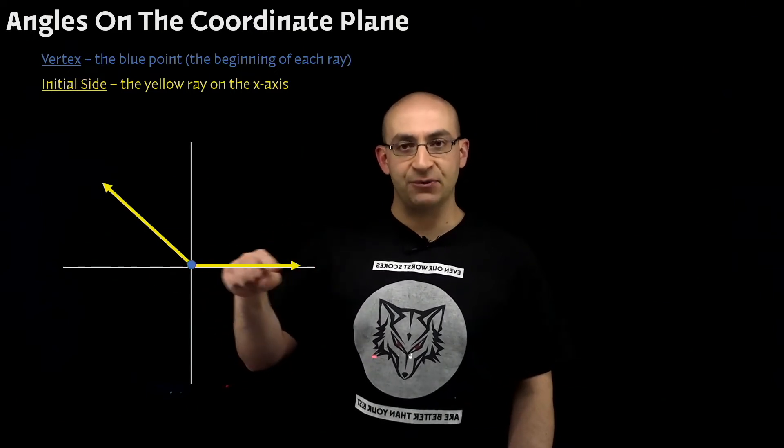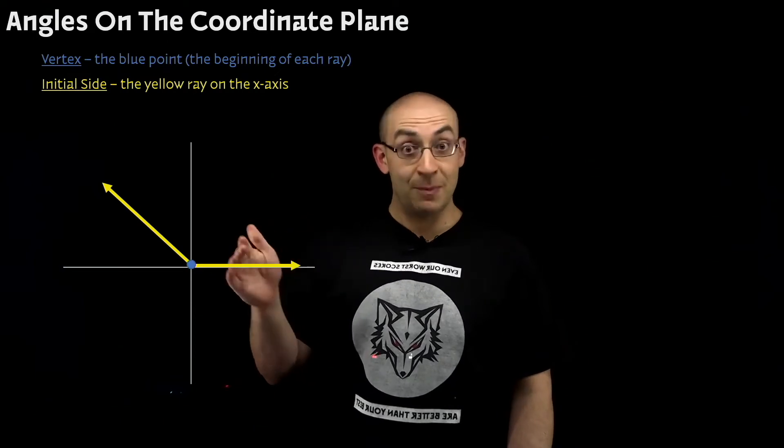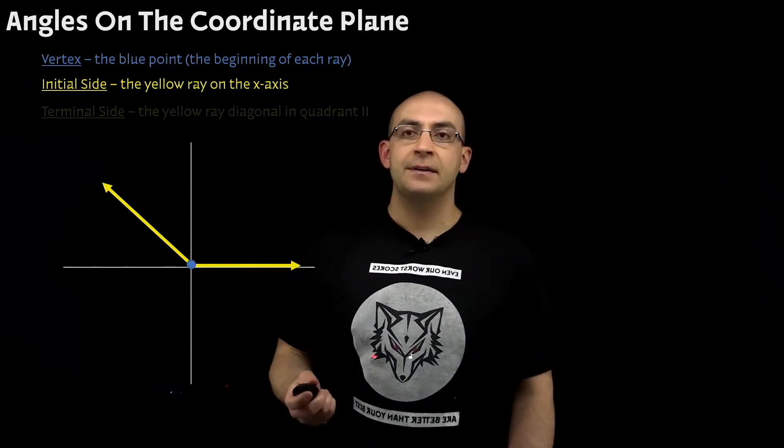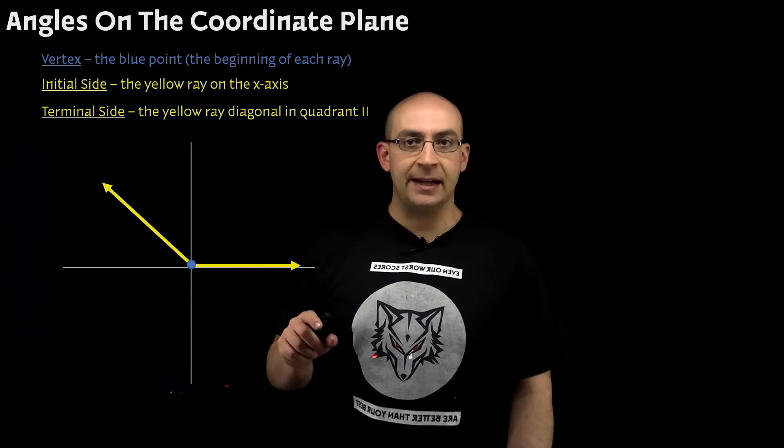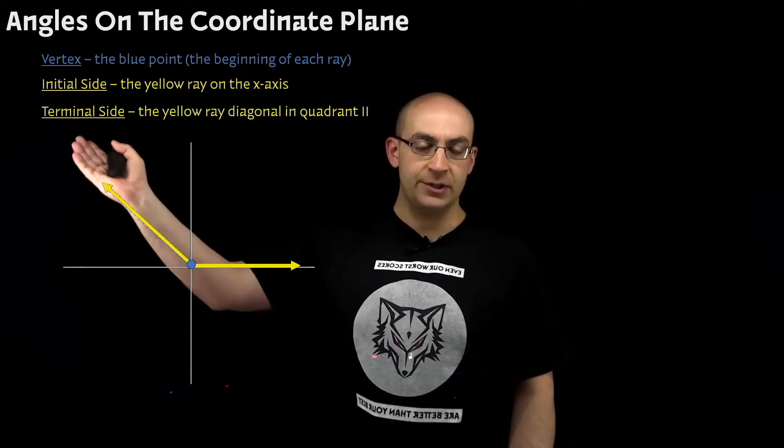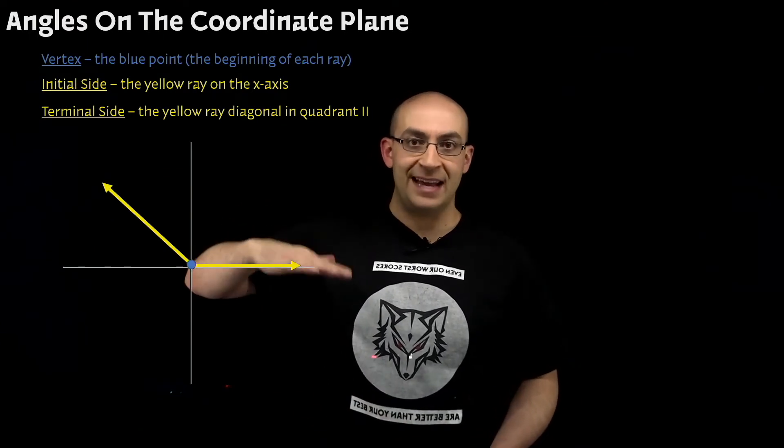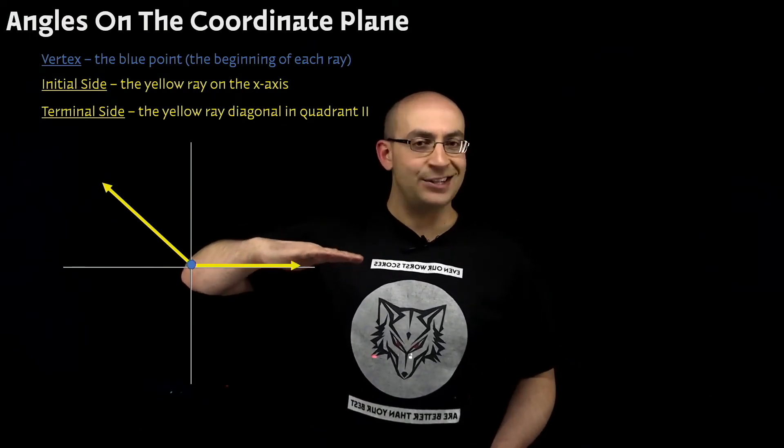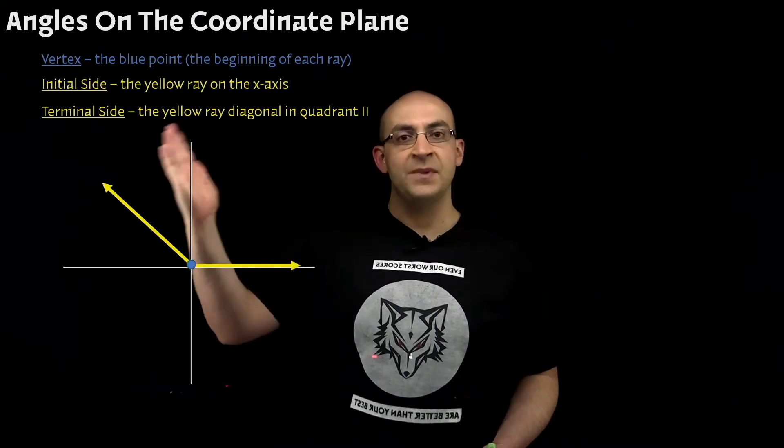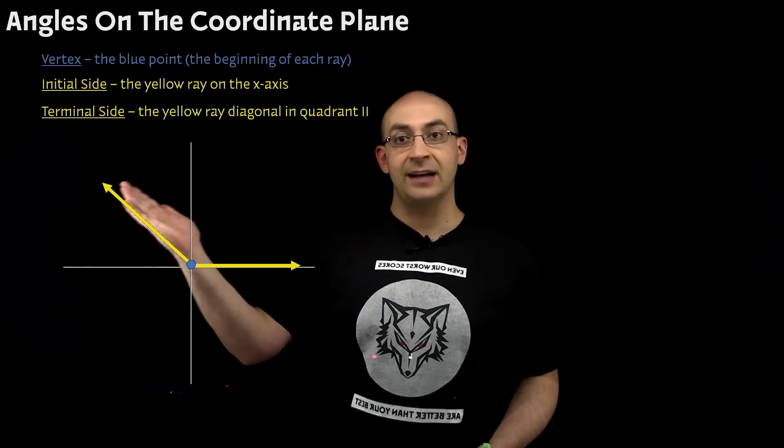That's why this ray is the initial ray, or the initial side, the beginning. The terminal side is the yellow ray that's the diagonal pointing out towards quadrant 2. So basically, the motion of this angle starts at its initial side, which is on the x-axis, and opens up and terminates, or ends, at the terminal side, which is in quadrant 2.